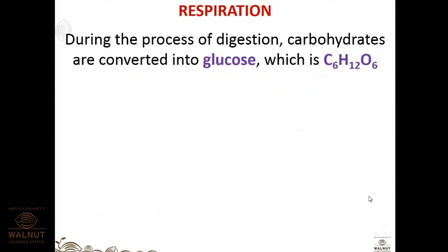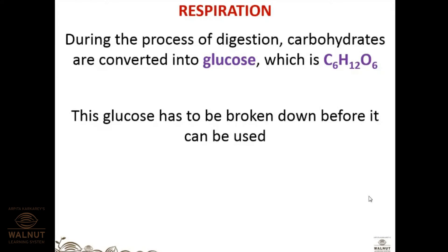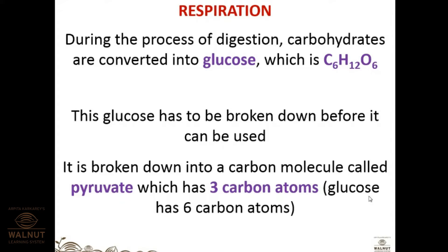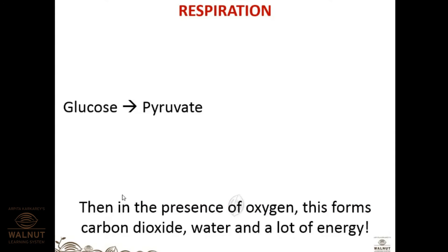During digestion, carbohydrates are converted into glucose, which is C6H12O6. This glucose must be broken down before energy can be released. It is broken down into a three-carbon molecule called pyruvate. This is very important from the standard 10 perspective — glucose with six carbon atoms is broken down into pyruvate with three carbon atoms.